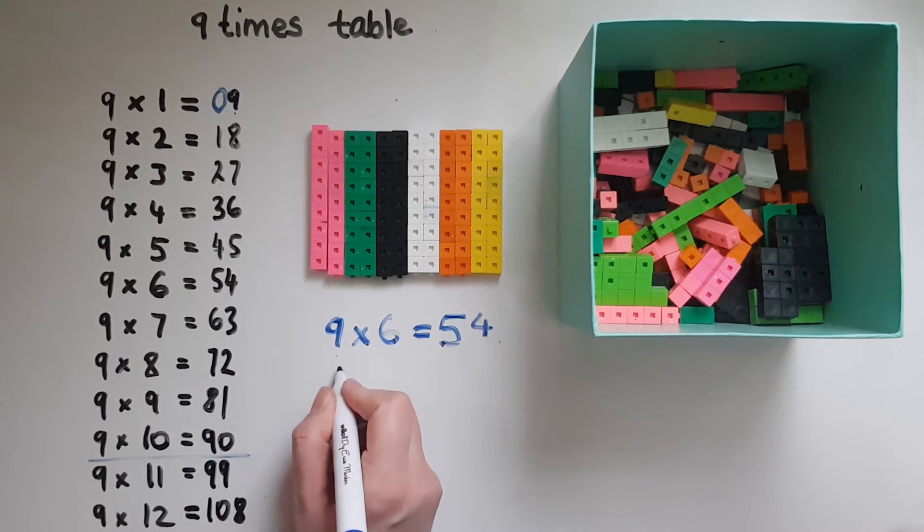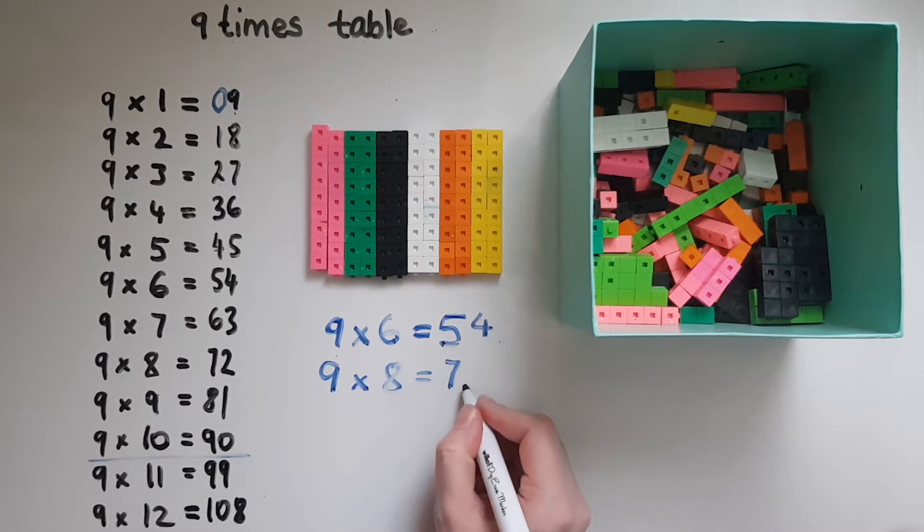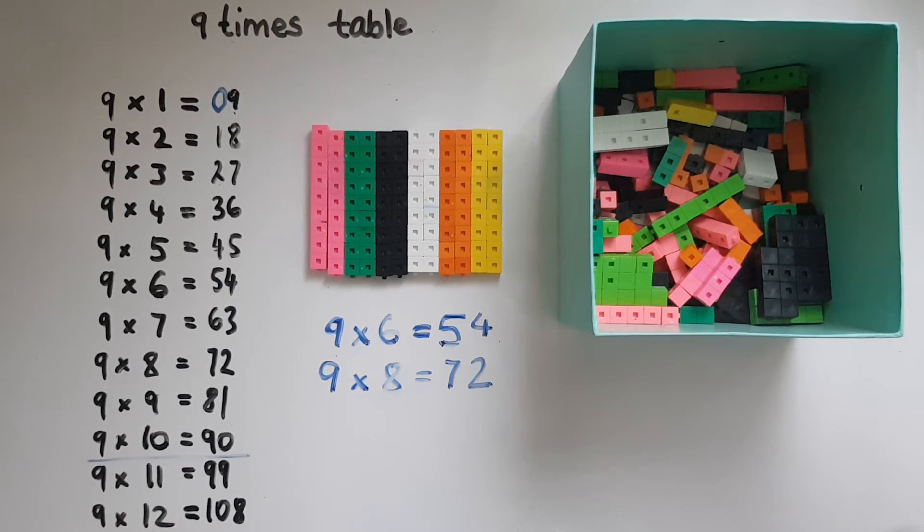So I can do another example: 9 times 8. I know the answer is going to begin with 1 less, which is 7. 7 add what gives 9? That is 2. So the answer is 72.